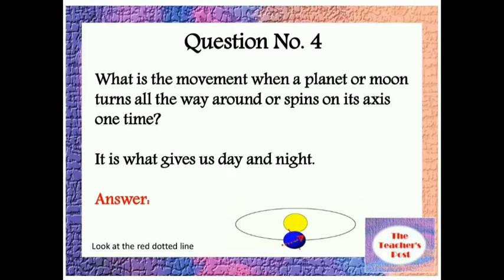Question number four: What is the movement when a planet or moon turns all the way around or spins on its axis one time? It is what gives us day and night.